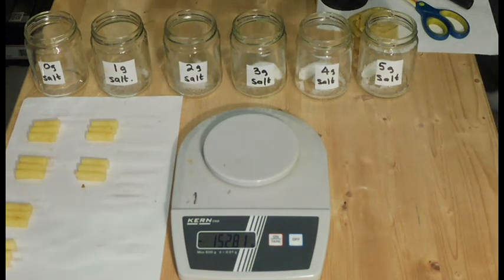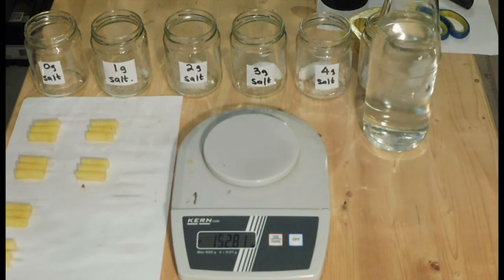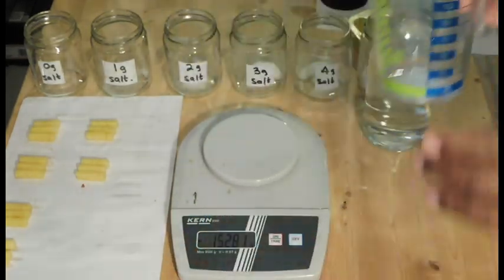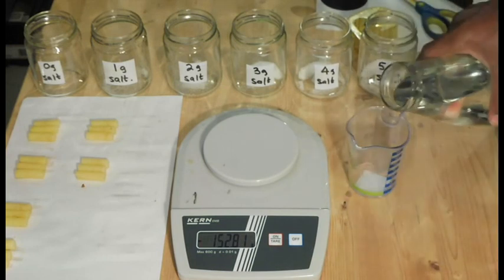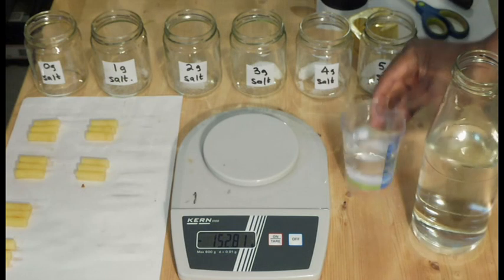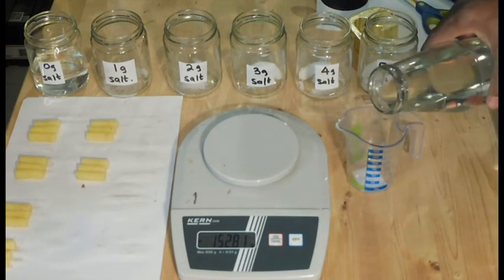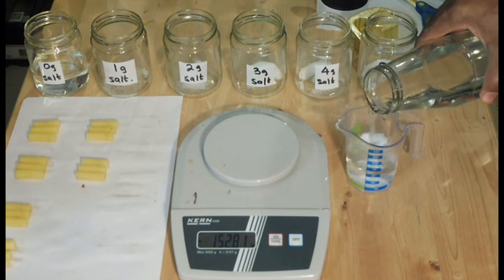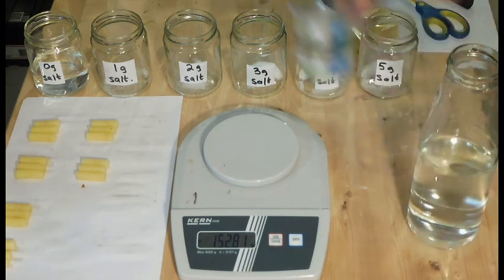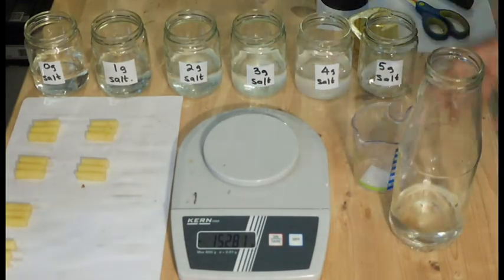Note, the first one has no salt, hence it's labeled 0 gram salt. Now it's time to add water into our jars. We will use a suitable measuring cup to measure 100 ml of water. To each of the jars, add 100 ml of water. Stir well in each jar until all the salt has completely dissolved.